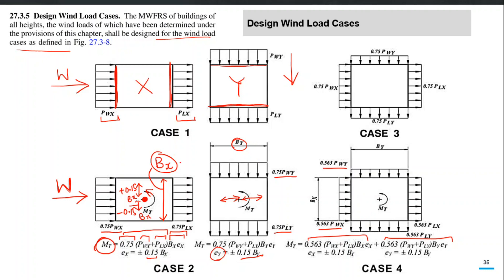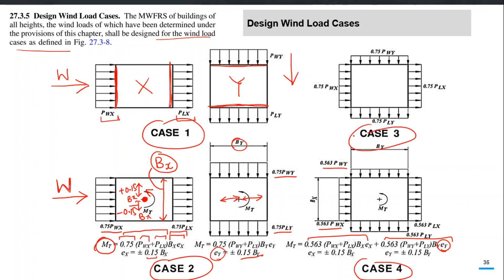When we look at the directions of eccentricity — Ex and Ey — and the sign of those eccentricities (positive and negative), the four cases actually split into 12 cases total for one particular direction of wind. I will explain that when we go to ETABS, how 12 cases are made for one particular direction of wind. The eccentricity in X can be positive or negative; similarly Ey can be positive or negative. We will see in the software that it creates different sub-cases within one load case, covering cases 1 through 4 for each direction of wind.